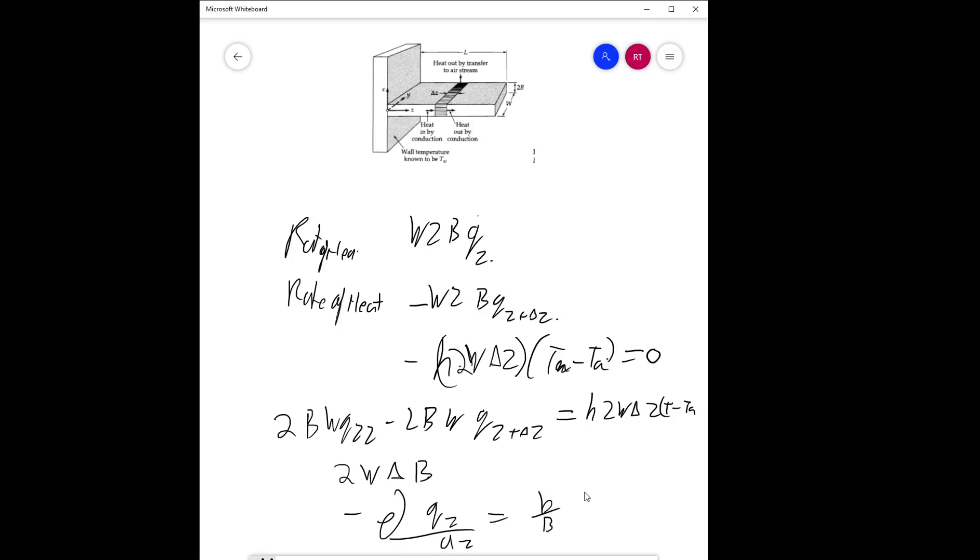Now let's expand this equation by substituting the value for Q_z. Q_z can be written as minus K times dT/dZ. Substituting this value, we'll get d²T/dZ². The negative signs cancel, so it's just (HK/P)(T minus T ambient).